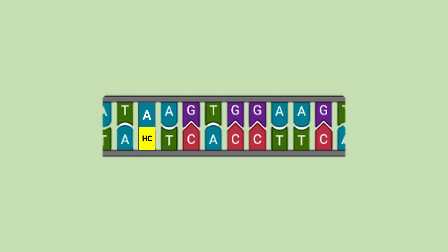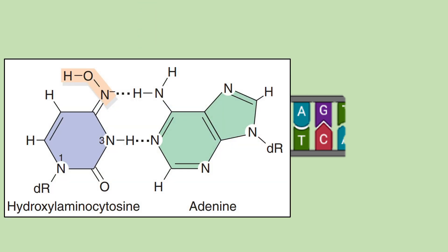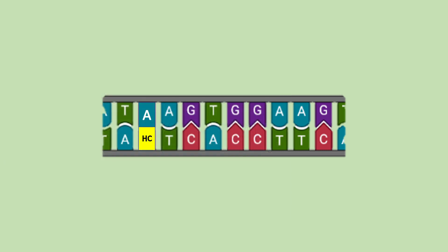Hydroxylaminocytosine pairs with adenine instead of guanine, thus creating a transition mutation. This can be reverted back with 5-bromouracil or nitrous acid.